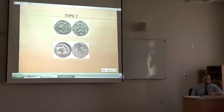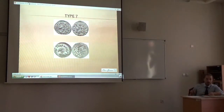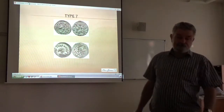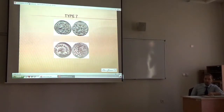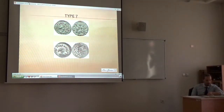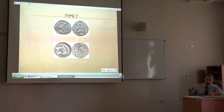Type 7 is a quarter siliqua in the name of Justinian I, very similar to Type 2 and very similar to Type 5. I have only 6 coins of this type within the 500 coins of the Sirmium group. Type 7 shares its only obverse die, O98, with Type 8.